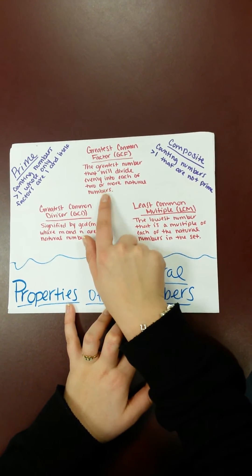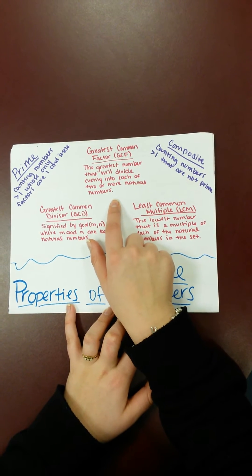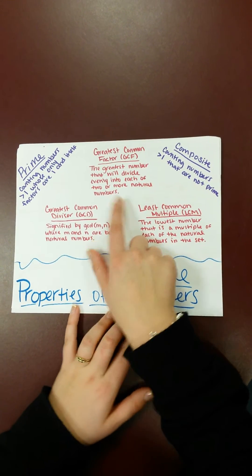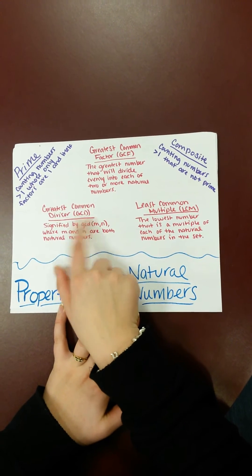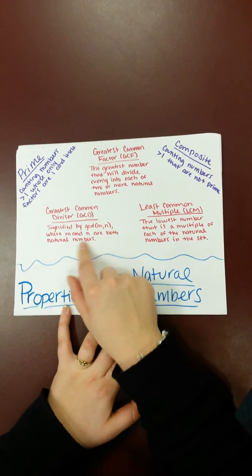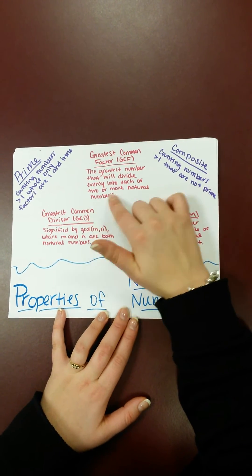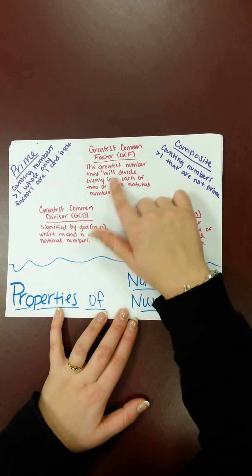The next thing is greatest common factors, or GCF, and that's the greatest number that will divide evenly into each of 2 or more natural numbers. The next thing is also greatest common divisor, or GCD, and that's signified by GCD of M and N, where M and N are both natural numbers. And these two things are basically the same thing, since factoring something and dividing something are basically the same thing.